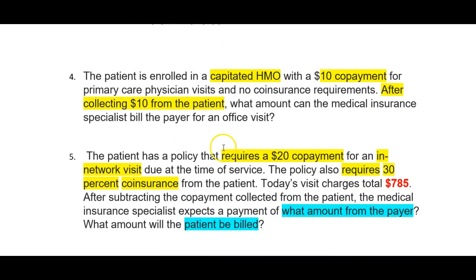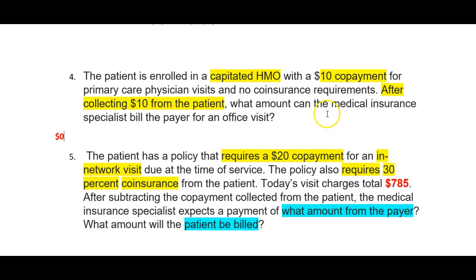The patient is enrolled in a capitated HMO with a $10 copayment for primary care physician visits and no coinsurance requirements. After collecting the $10 from the patient, what amount can the medical insurance specialist bill the payer for an office visit? In this case, the patient is part of a capitated HMO. With capitated HMO plans, we cannot collect any further payment from the patient other than their copays. So the amount we can bill is $0.